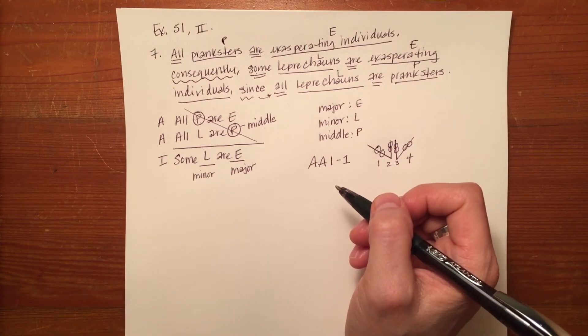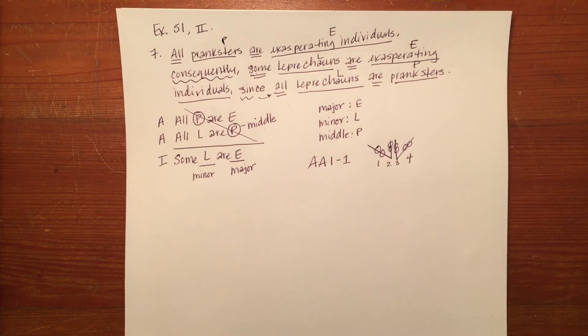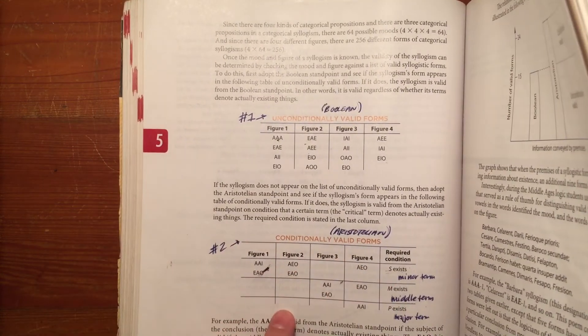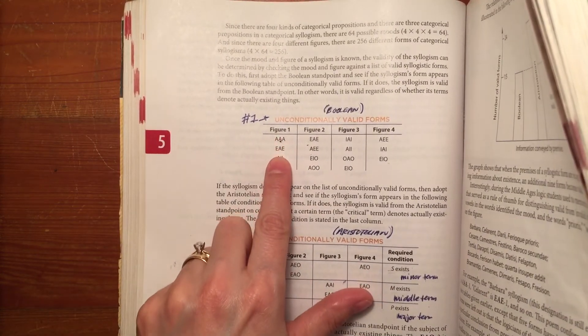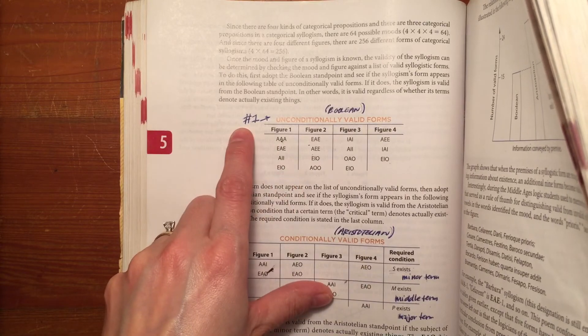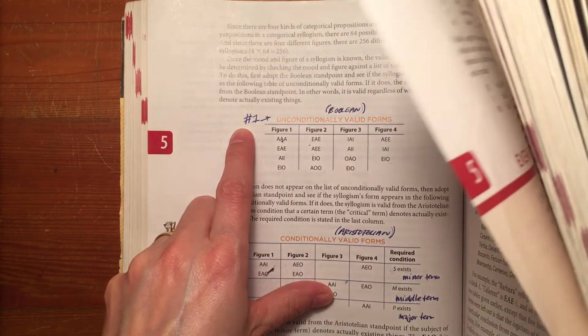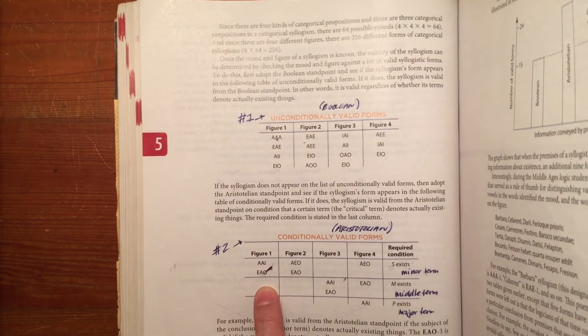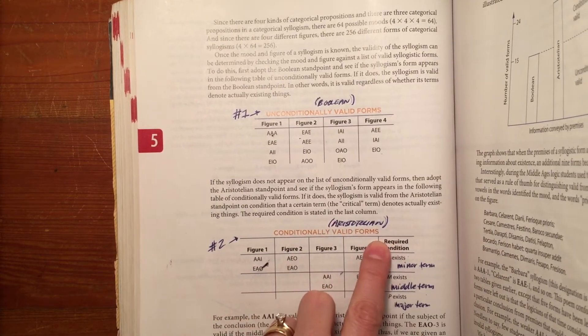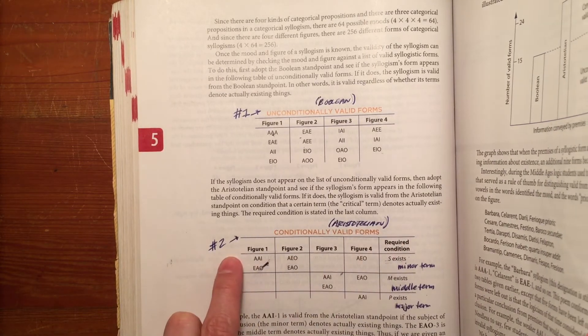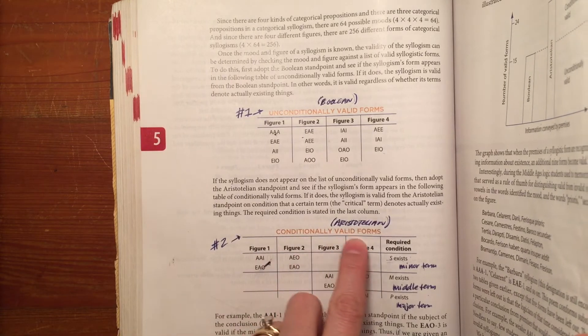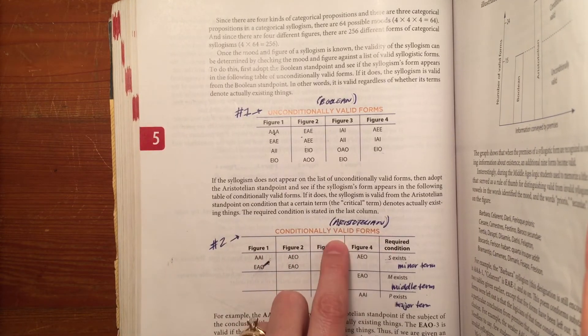Now if I look at my chart again, that's on page 262, I see I'm looking for A, A, I under figure one. But I don't see it here under figure one in the unconditionally valid forms chart. So that's an indication that my next step is to move to the second chart, the conditionally valid forms chart. And indeed, I do find the mood A, A, I under figure one in the conditionally valid forms chart or the Aristotelian one.